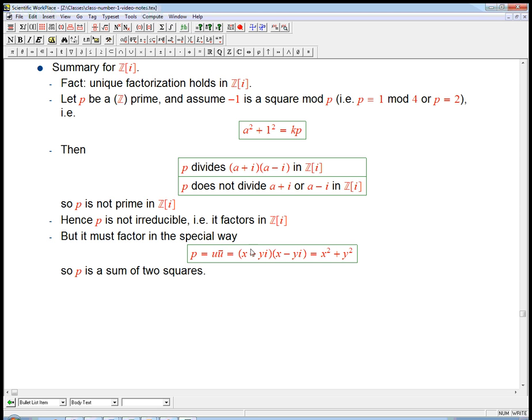So that's a summary of basically everything I've done so far. And it turns out the most subtle step is this connection between prime and irreducible, and that really relies on unique factorization holding in the Gaussian integers.